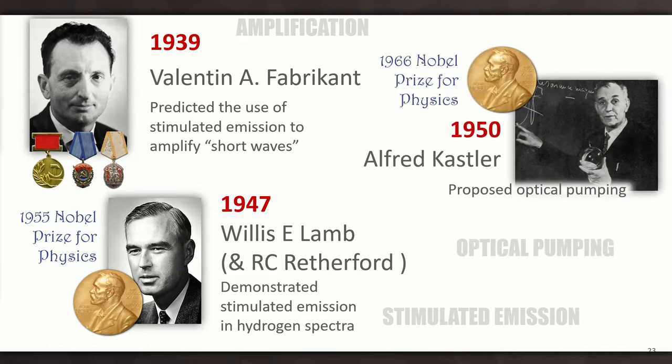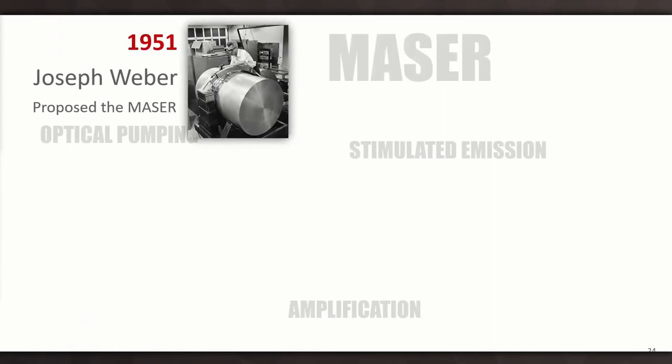Alfred Kastler proposed the idea of optical pumping. He proposed the idea in 1950. He shared the 1966 Nobel Prize for physics. Optical pumping is the idea you have to get these electrons into an excited state. So one way is you shine some light into the material and pump them up to these excited states. So we see all of these various ideas floating around. And by 1951, a guy called Joseph Weber proposed the MASER, the Microwave Amplification by Stimulated Emission of Radiation. And this is just after the war. Radar, during the Second World War, took many strides forward.